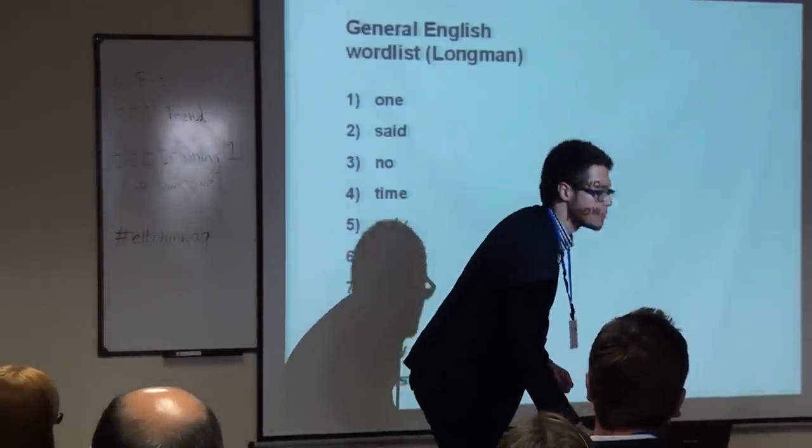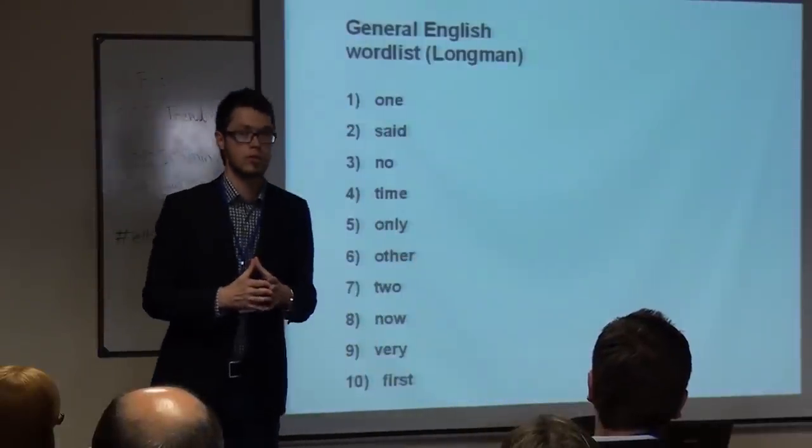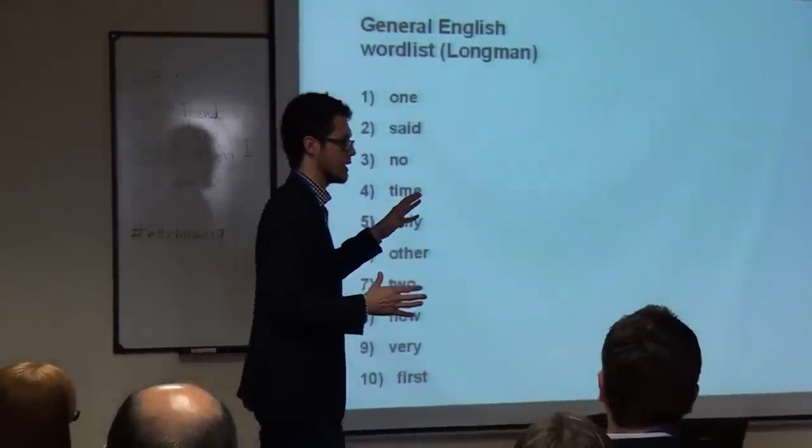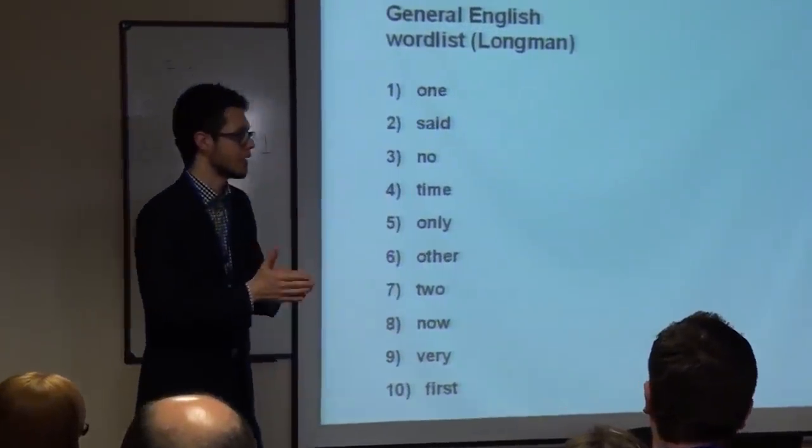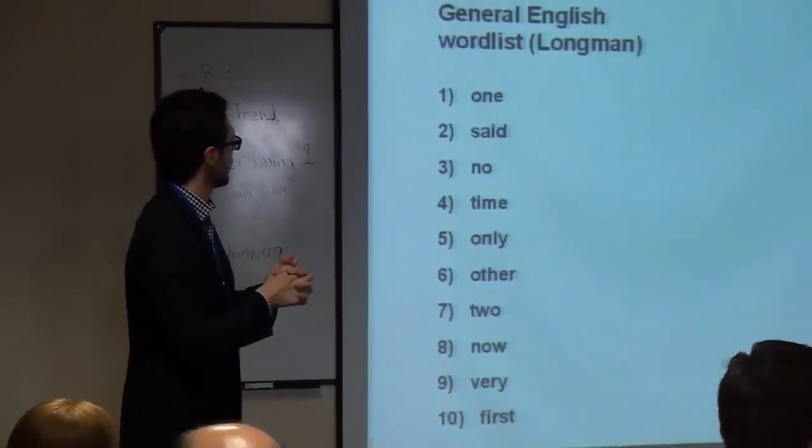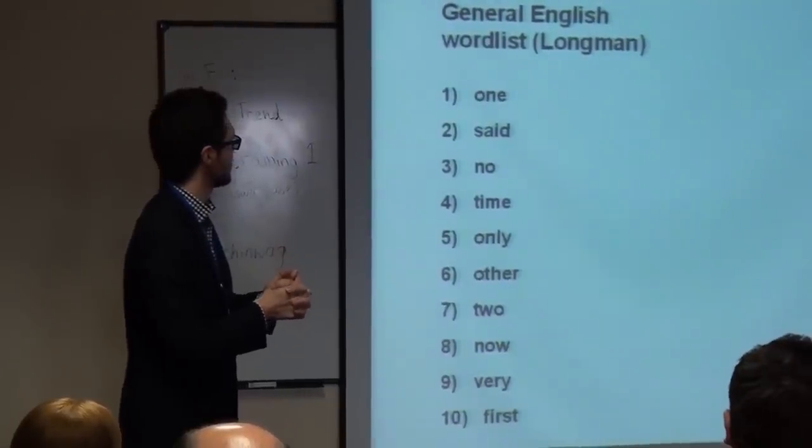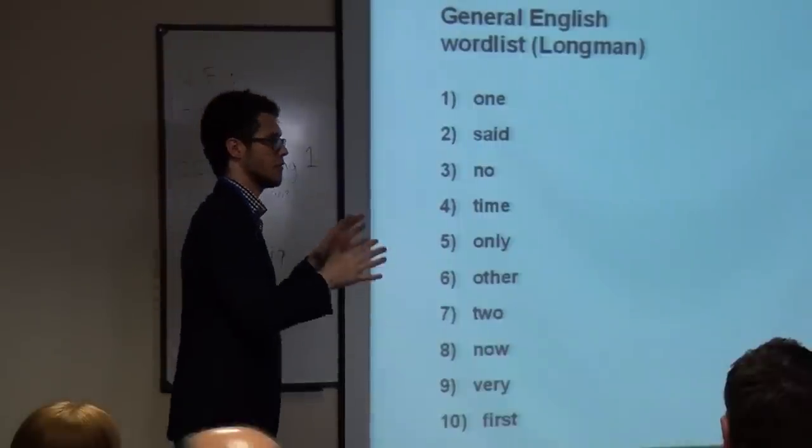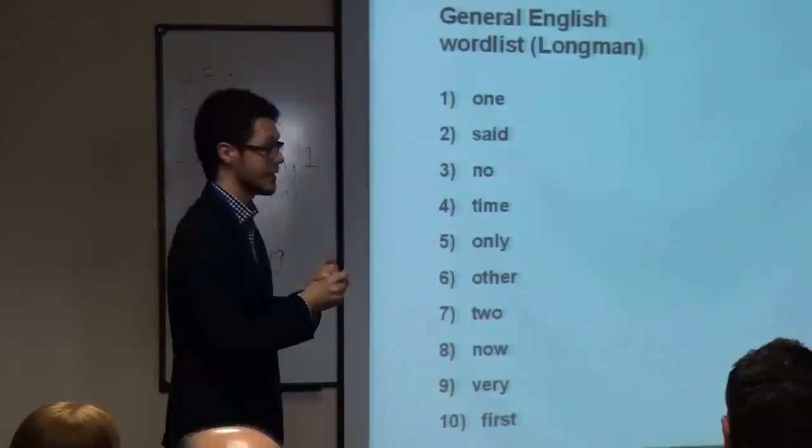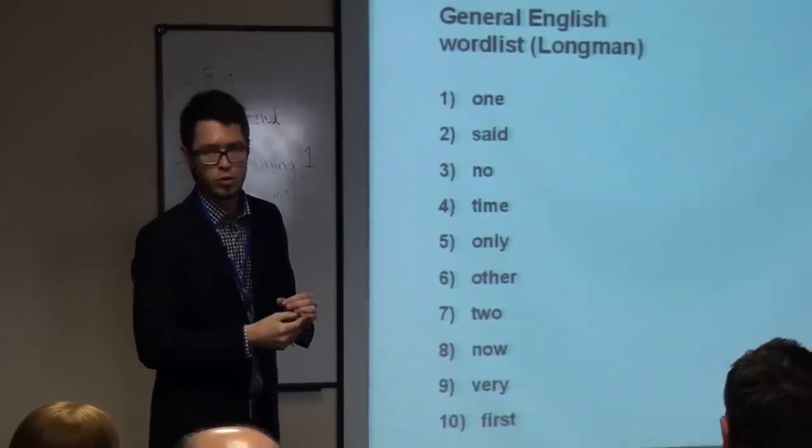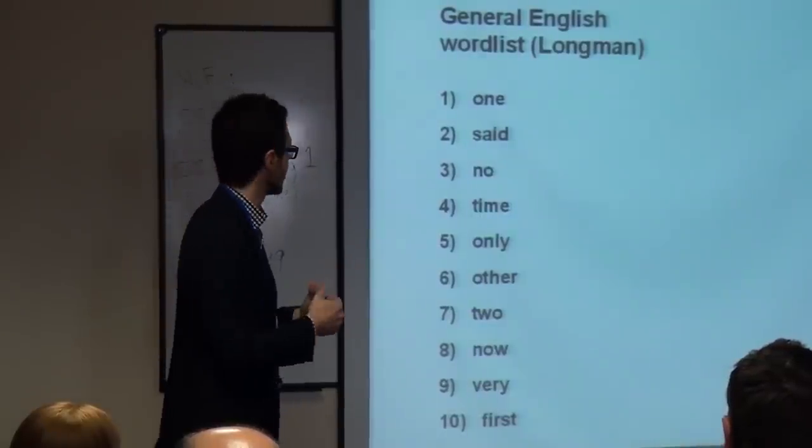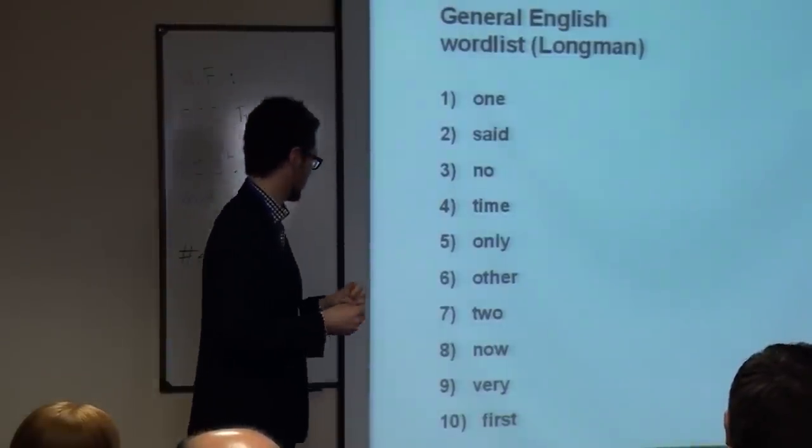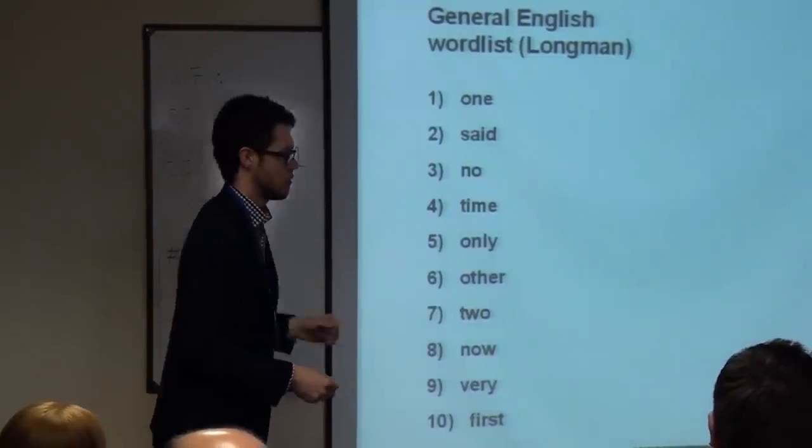So all of those words were so-called functional words. Those ten words, they don't really have any proper meaning. They perform some function in the language. Here, what I've done with the Longman corpus of English, I removed all the functional words from the list and just left out so-called literal words. So words which have some meaning. And this is what we've got: one, said, no, time, only, other, two, now, very, first. As you can see, quite a few numbers there.